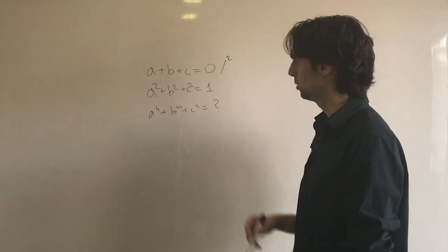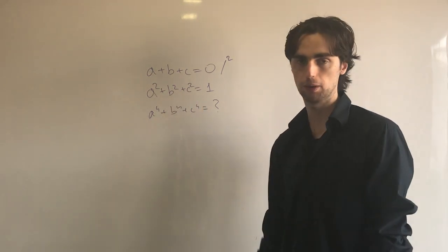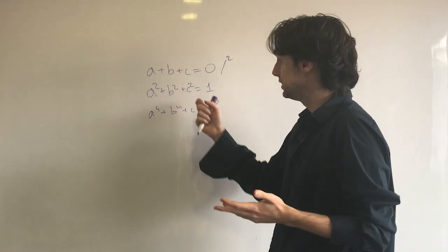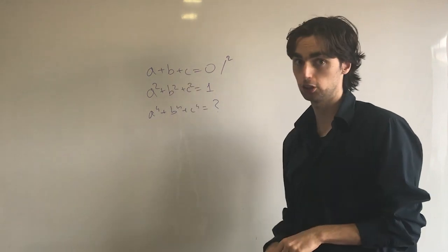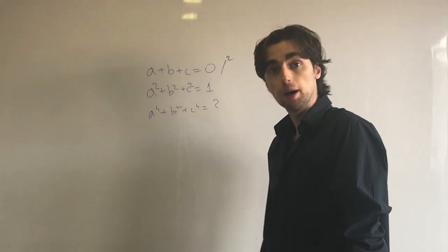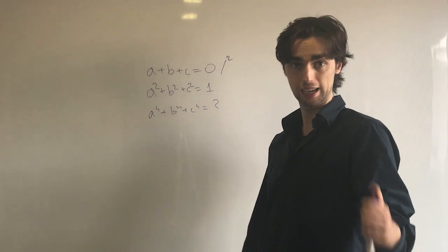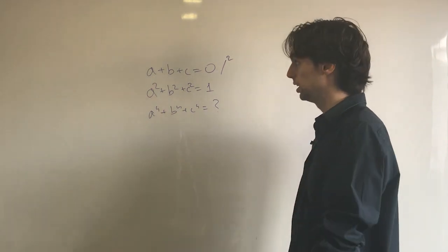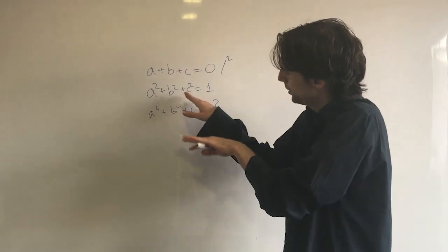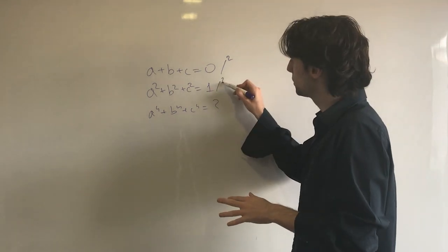So we square the second equation. Why? Because we're working towards a⁴ + b⁴ + c⁴, and it's easier to square this equation than to raise it to the fourth power. Raising to the fourth would be a mess, so let's square it instead and see what happens.